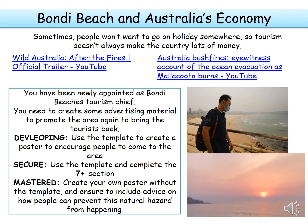Our last part of the lesson is about why some people might not want to go on holiday to Australia and Bondi Beach, which means the beach won't make as much money. On the class platform, I've attached two videos about wildfires in Australia. Watch those videos and think about why people might not want to go to Australia and what might stop them from visiting Bondi Beach. After the wildfires, people were quite scared that the natural hazard could happen again.